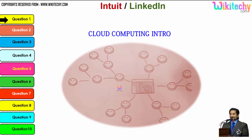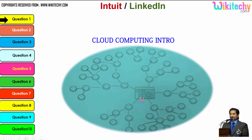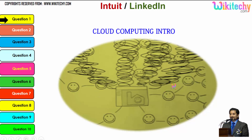Let's talk about the cloud computing intro. This is a computer connected to a server, and this server is monitoring this computer. Once the network becomes bigger, the monitoring becomes tougher. If more computers are added, the network grows larger and the monitoring system becomes really slow. There is also a possibility that the network crashes or the server cannot monitor specific networks.